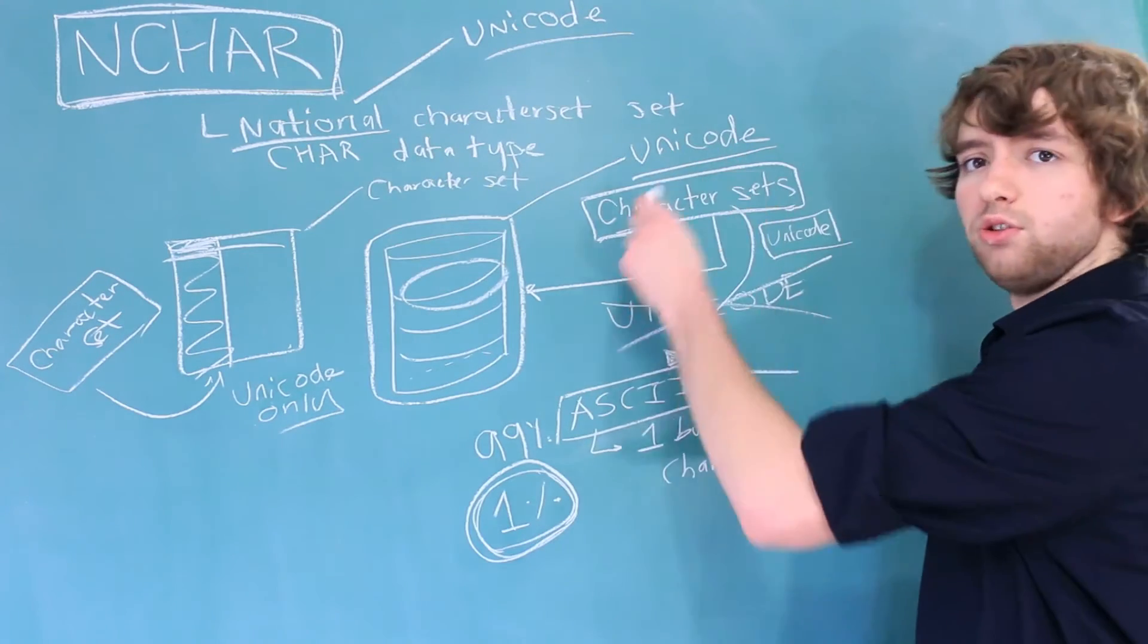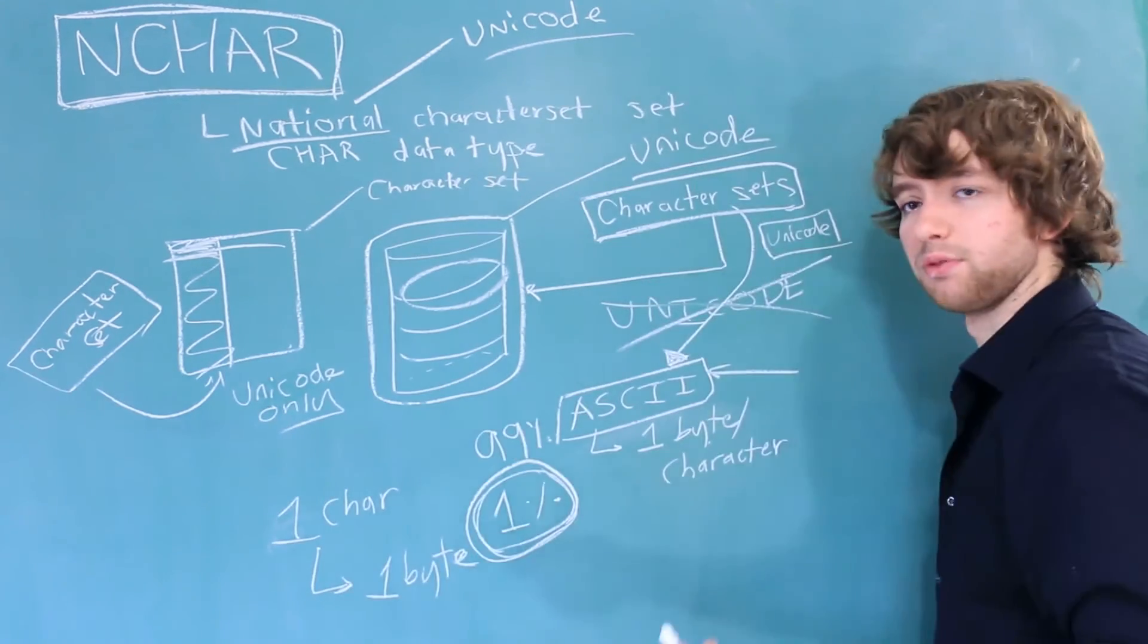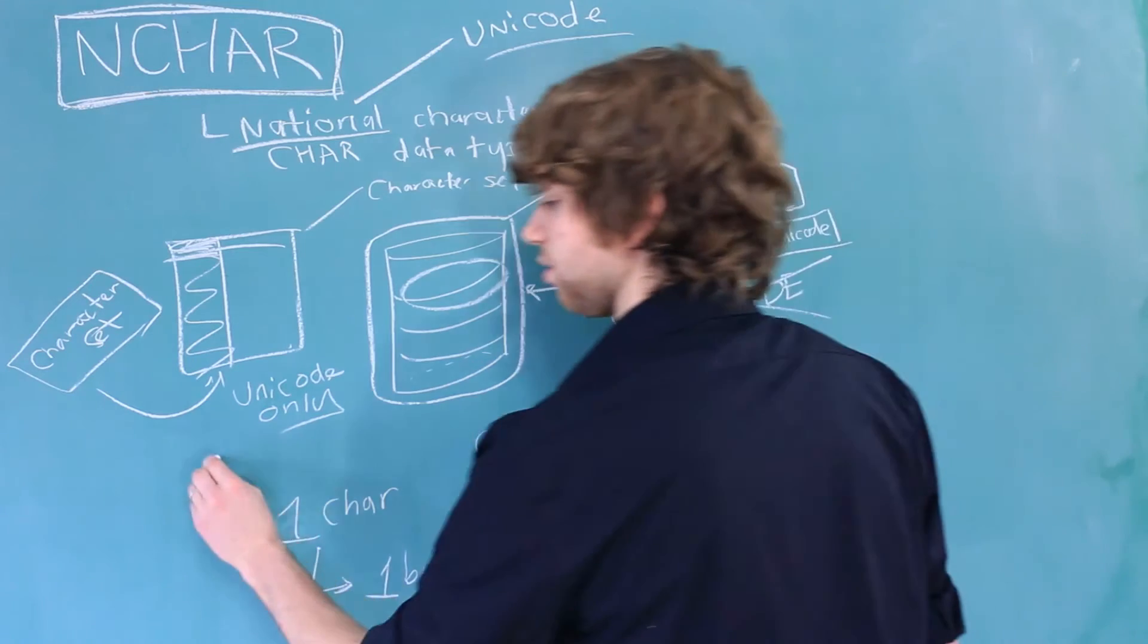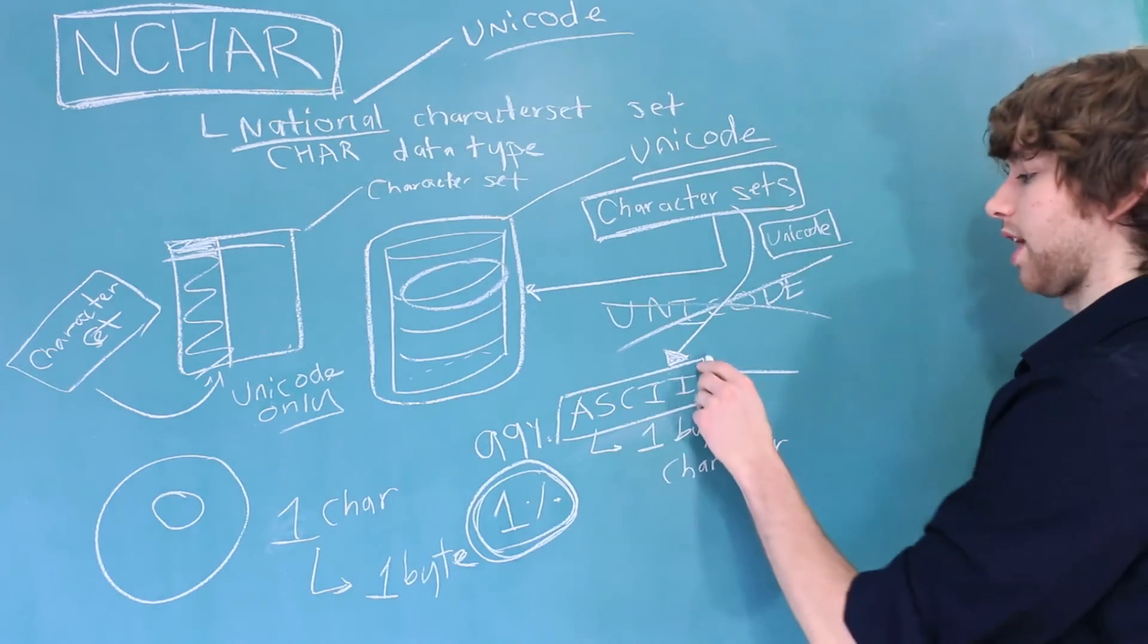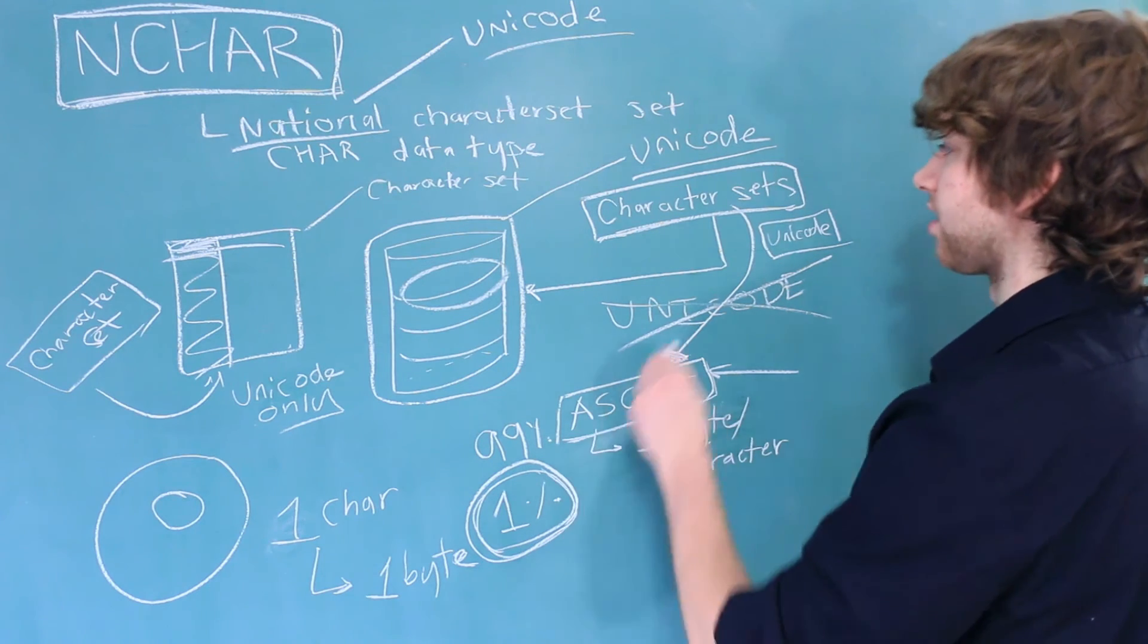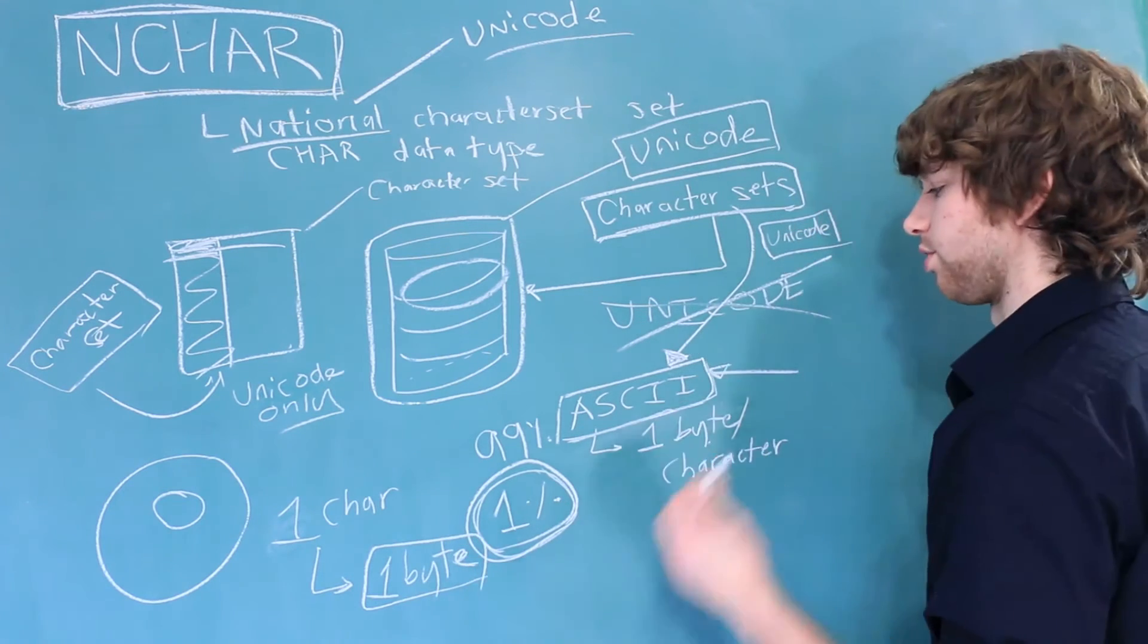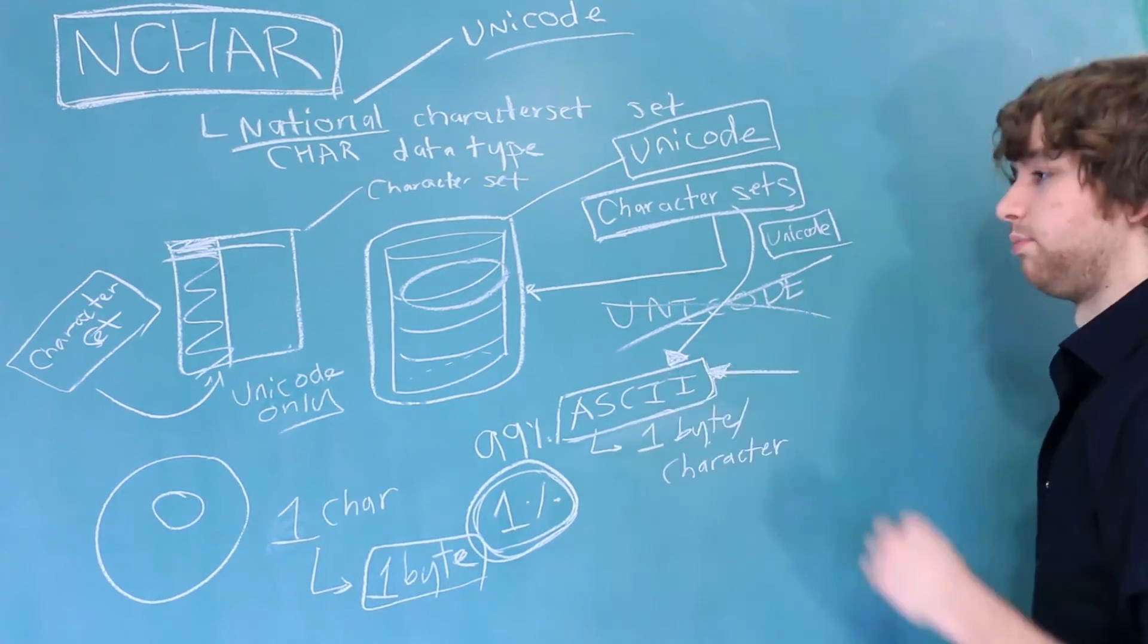Especially since in Unicode, one character can also take up one byte. That's because as we mentioned before, Unicode is a superset of ASCII. So this here is Unicode. ASCII is right here. That means if we use ASCII characters inside of a Unicode character set, they are only going to take up one byte. So there is not an obvious benefit of making your character set ASCII.